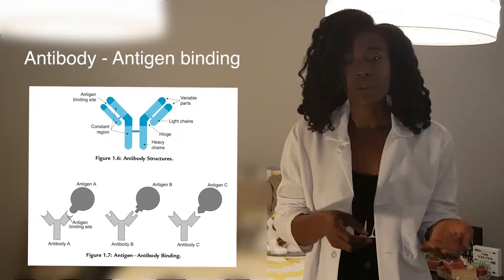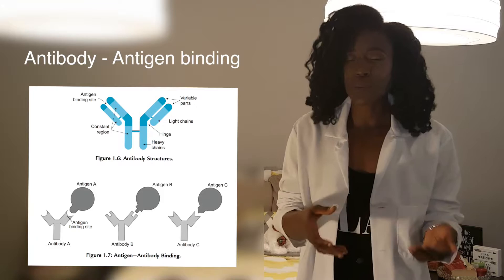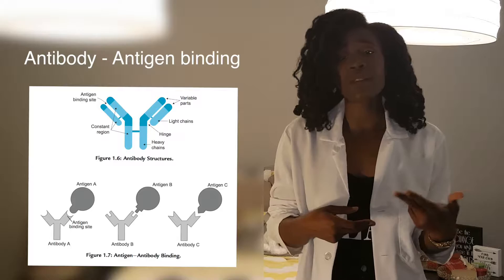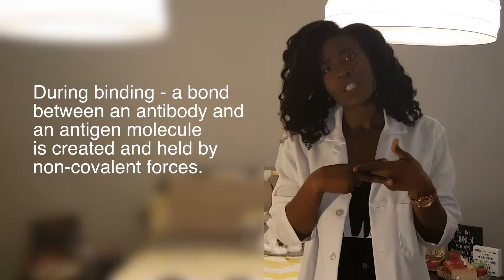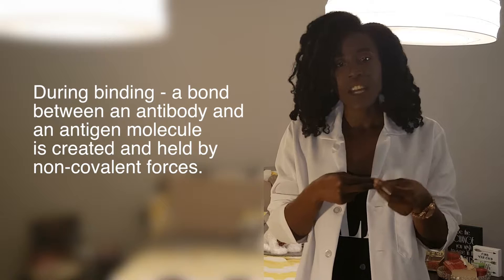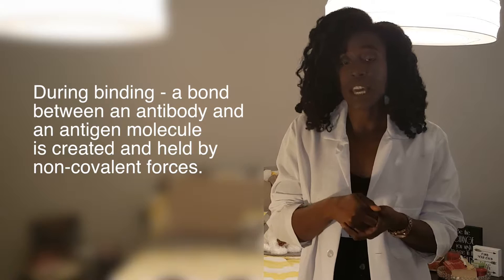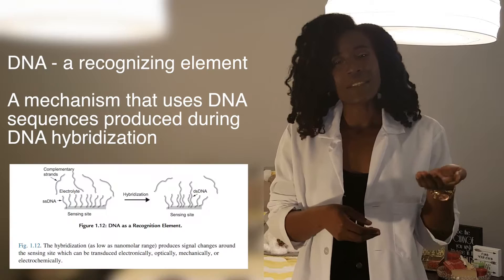An antigen is actually a molecule that differs in shapes and charges. An antibody, which is a protein produced by our immune system, is made up of two light chains and two heavy chains that mold it into the letter Y. When these two bind through non-covalent forces, you have a change in charges that generates a signal, which can then get transduced and measured.